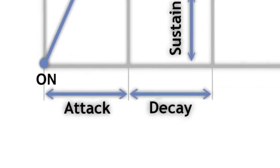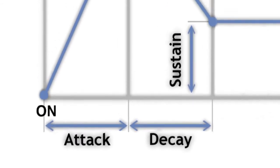Attack time is the time taken for the initial run-up of level from nil to peak, beginning when the key is first pressed. Decay time is the time taken for the subsequent run-down from the attack level to the designated sustain level.